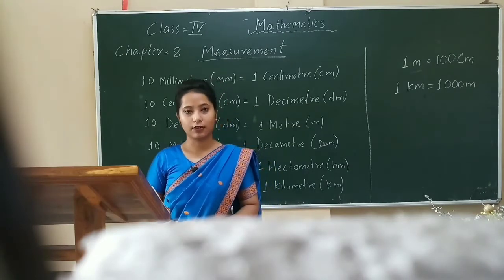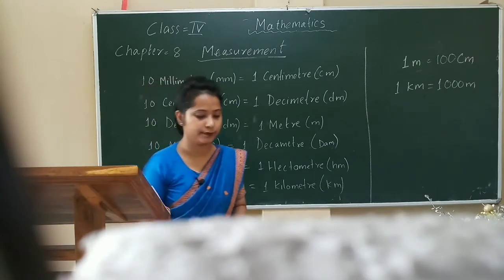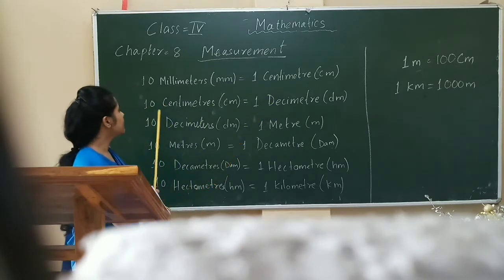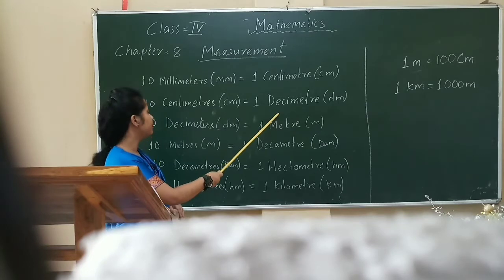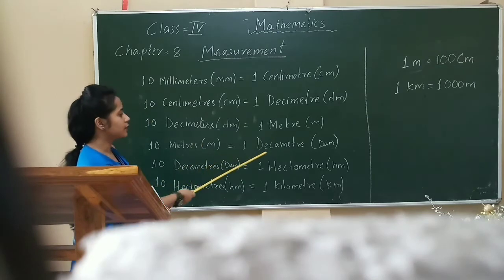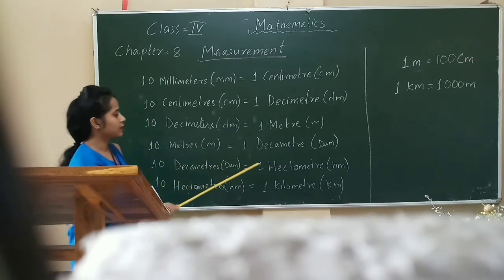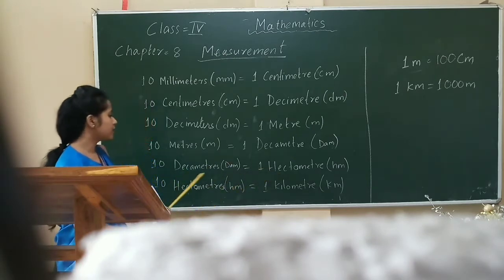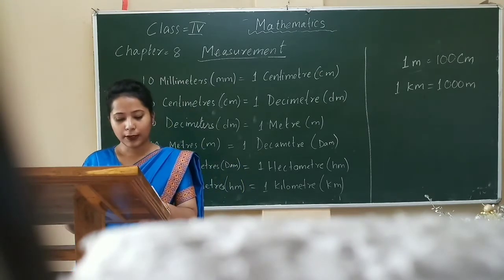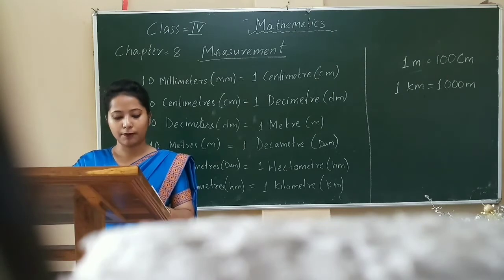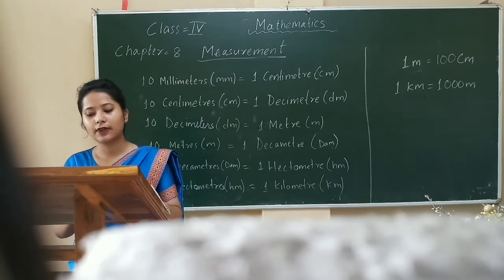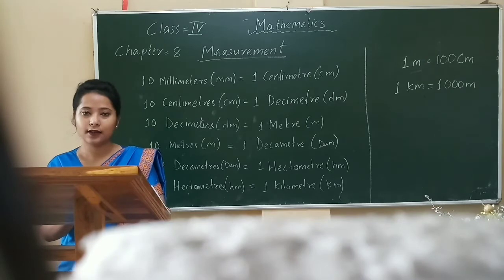Now let us concentrate on the table of measurement of length: 10 millimeters equal to 1 centimeter, 10 centimeters equal to 1 decimeter, 10 decimeters equal to 1 meter, 10 decimeters equal to 1 decameter, 10 decameters equal to 1 hectometer, and 10 hectometers equal to 1 kilometer. Point to remember: meter is the standard unit for measuring length. Division of length by a whole number results in length. Division of length by length results in a number.